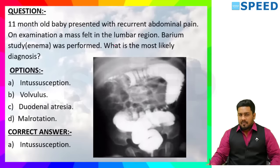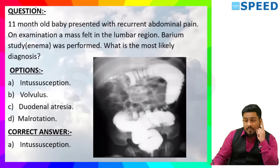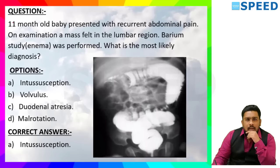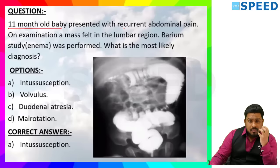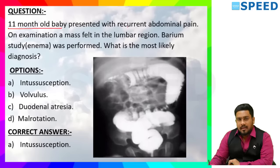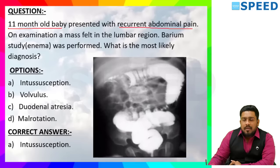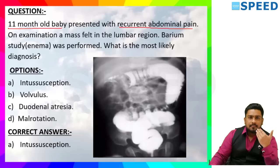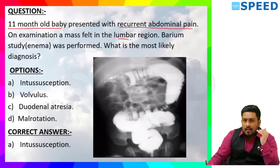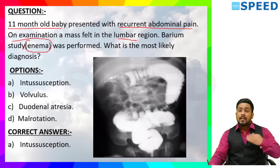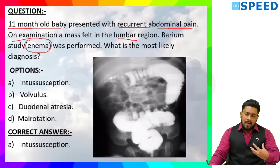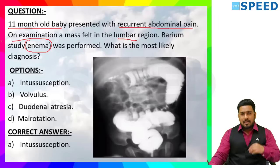Let us decode the question because from the question itself we can come to the correct answer. 11-month-old baby — paediatric age group, chances of structural abnormality are more. Presented with recurrent abdominal pain — recurrent, not continuous. On examination a mass was felt in the lumbar region. Barium enema was performed — through the rectum, anal canal, sigmoid colon, the barium is passed and the study is made.